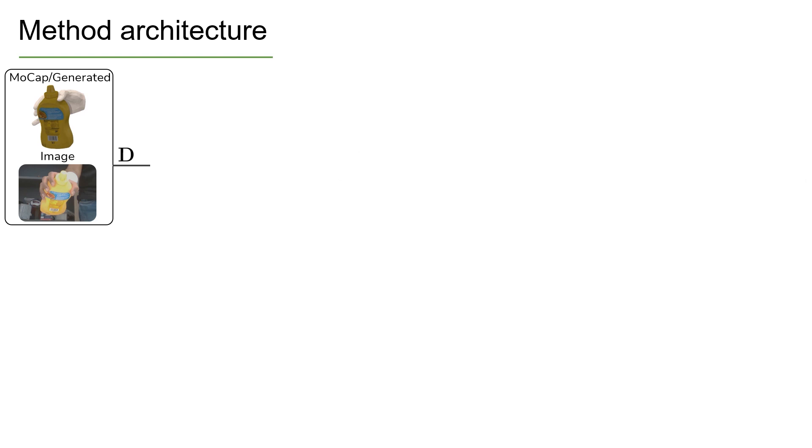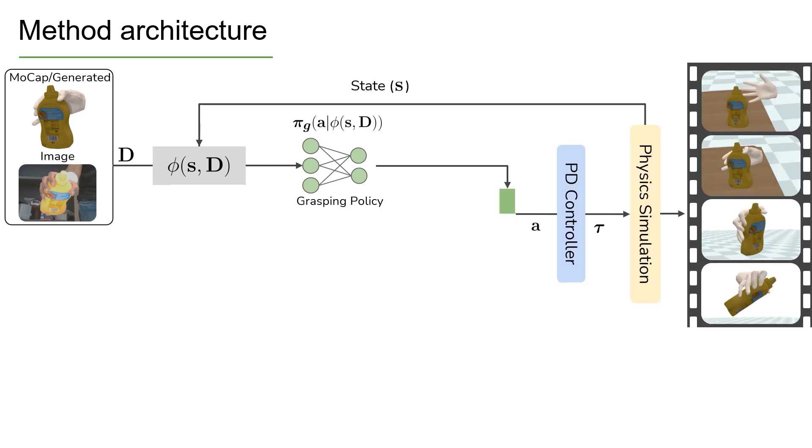In the grasping phase, we take an object mesh along with a grasp reference from motion capture or images as input. We apply a feature extraction layer that transforms the state space and grasp label into an object-relative representation. Then, we employ a grasping policy which predicts the actions that guide the hand towards a stable grasp. The hand is controlled in a physics simulation and allows us to reason about contacts and dynamics.